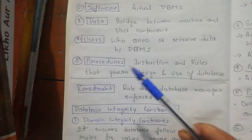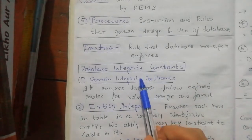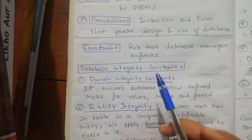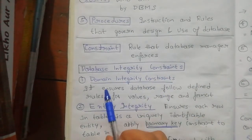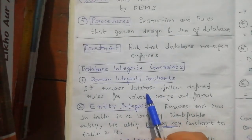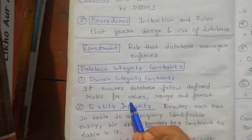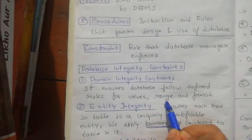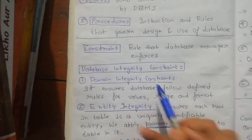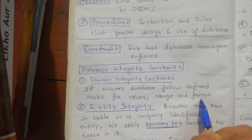We have database integrity constraints, and there are three types. First is the domain integrity constraint — it ensures the database follows defined rules for values, range, and format. So domain integrity constraints are applied for value range and format.